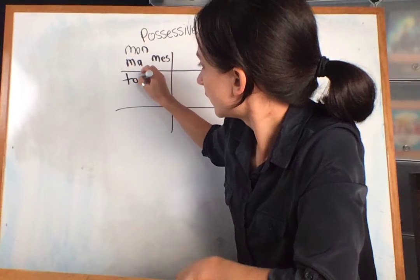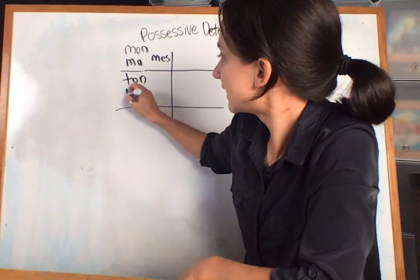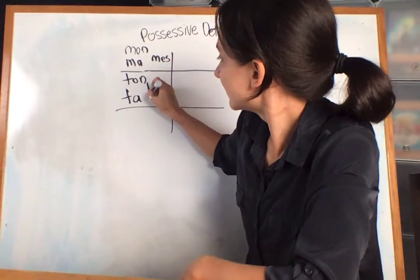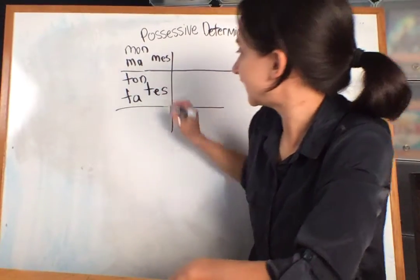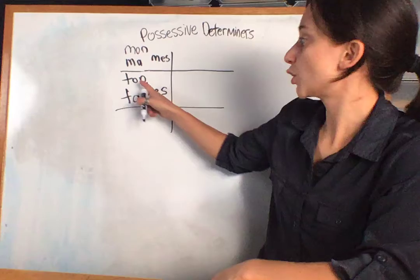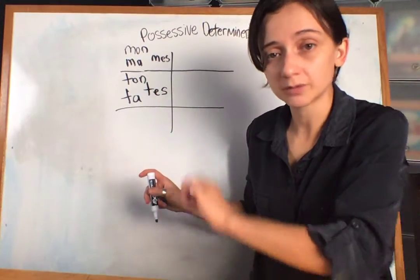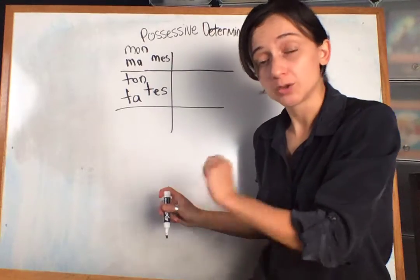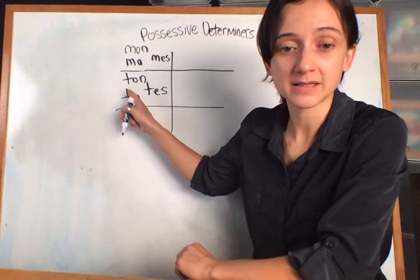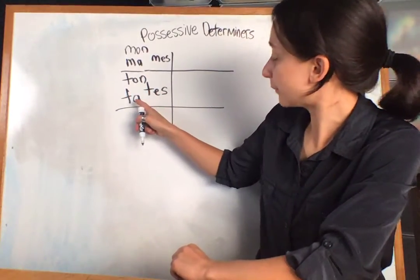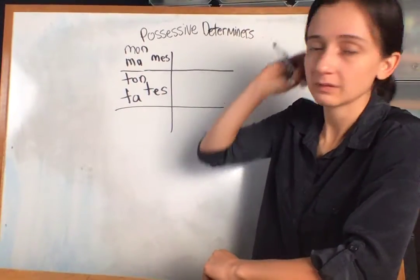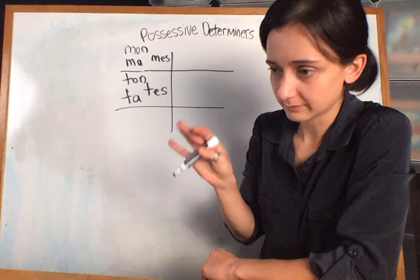And the good news is that they kind of rhyme. Ton, your, ta, your, tes, also your. So you could say ton père, your father, ta mère, your mother, tes parents, your parents. Masculine, feminine, and plural. That's pretty simple.